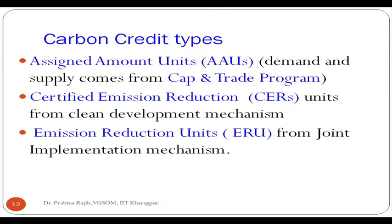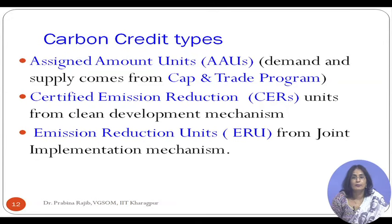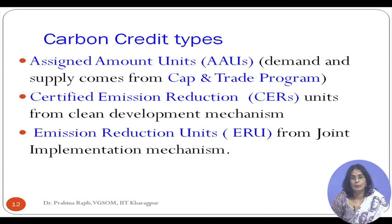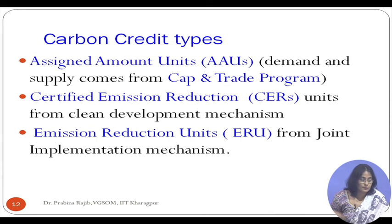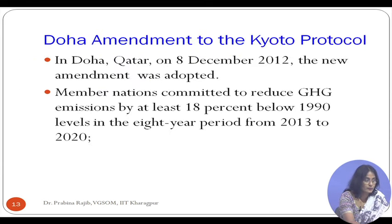So these are the three different types of carbon credits which a company can own or trade: AAUs from the cap and trade program, Certified Emission Reduction units from the Clean Development Mechanism, and Emission Reduction units from the Joint Implementation mechanism.